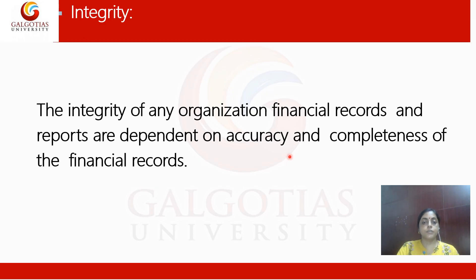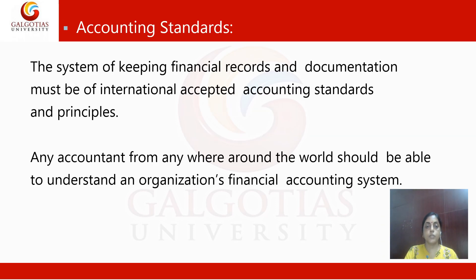The fifth principle is integrity. The integrity of any organization means that financial records and reports are dependent on accuracy and completeness of the financial record. The sixth principle is accounting standard — financial records should be in a simple form understandable to every stakeholder, maintained in an acceptable form for all members associated with the organization.